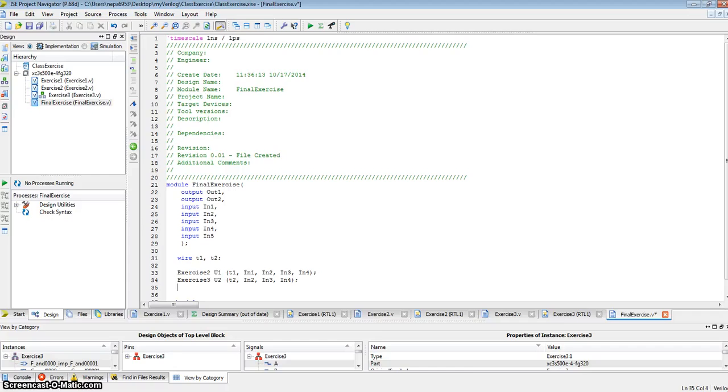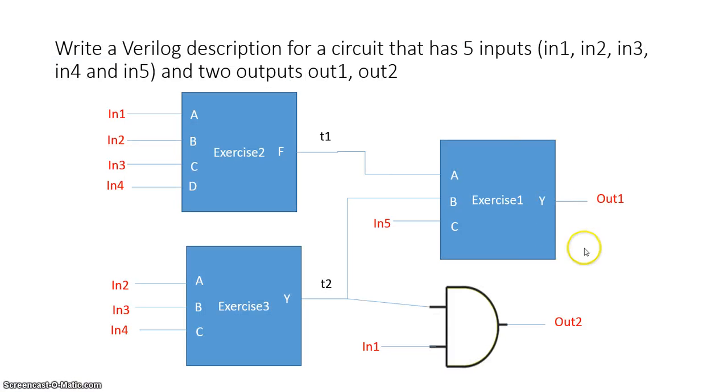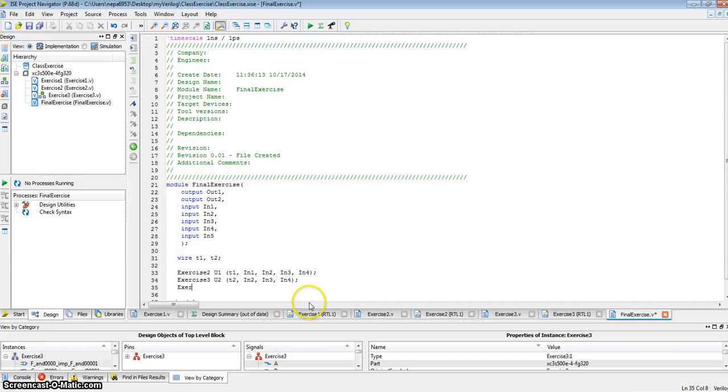Now finally, we have a module called exercise one. We'll call this module u3. So exercise one, it has three inputs, a, b, c, and an output y. y is connected to out1, a is connected to t1, b is connected to t2, and c is connected to in5. So exercise one, let me call that module u3. Output is called out1, a was connected to t1, b was connected to t2, and c was connected to an input called in5.